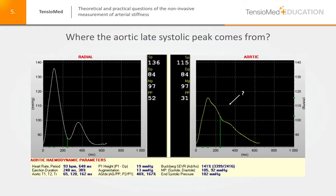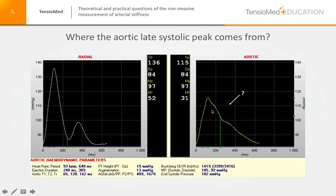In the aplanation tonometric technology, the input signal is typically the radial artery, and the radial artery pressure wave is mathematically transferred to the aortic pressure curve. However, if we do not have any input signal about the second systolic wave, it is questionable how it could be generated mathematically in the aortic pressure curve.